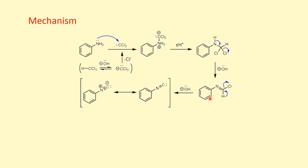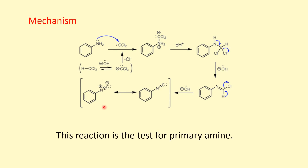The alkali OH⁻ ion takes H⁺, so the bonded electron pair shifts to carbon, and then the carbon–chlorine bonded electron pair shifts to chlorine, removed as chloride. The final species has phenyl group attached to nitrogen, and nitrogen attached to double-bonded carbon with a lone pair. In resonance, this lone pair of nitrogen forms a triple bond between carbon and nitrogen, giving C₆H₅–N⁺≡C⁻ — this is phenyl isocyanide, an aryl isocyanide. This reaction is given only by primary amines, so it serves as a test for primary amines, and also as a test for chloroform.